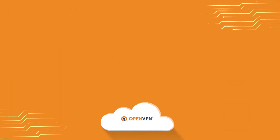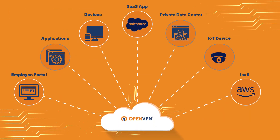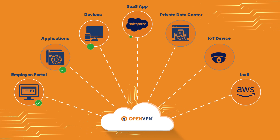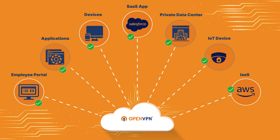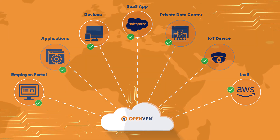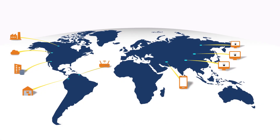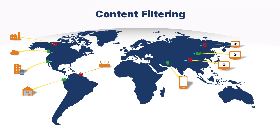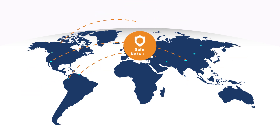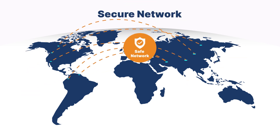OpenVPN Cloud minimizes your attack surface by securing access to trusted applications and devices. Built-in intrusion prevention, content filtering, and other security features block untrusted devices and applications, or can limit internet access to specific trusted destinations, which ensures your network stays secure.